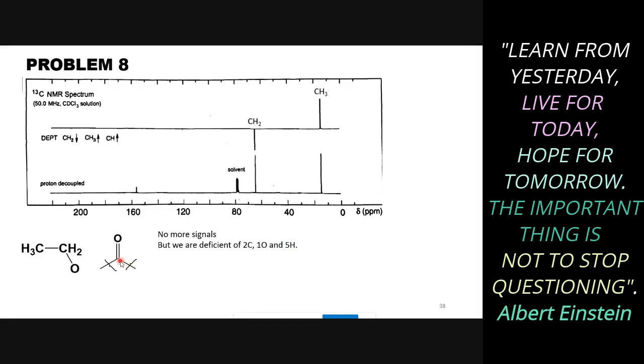Here we have three carbons, two oxygens and five hydrogens. And we're deficient of two carbons, one oxygen and five hydrogens. So what do you suggest? What are we missing? We don't have any other signal in the spectrum. So what we are missing here?